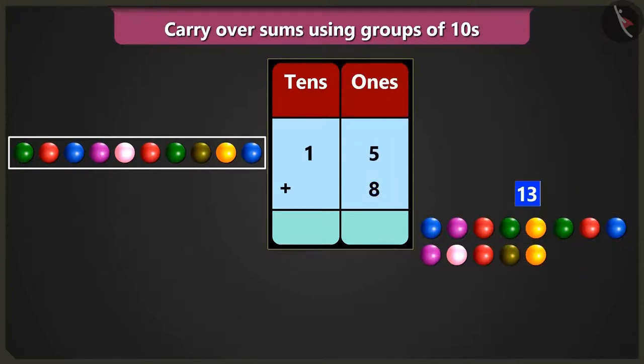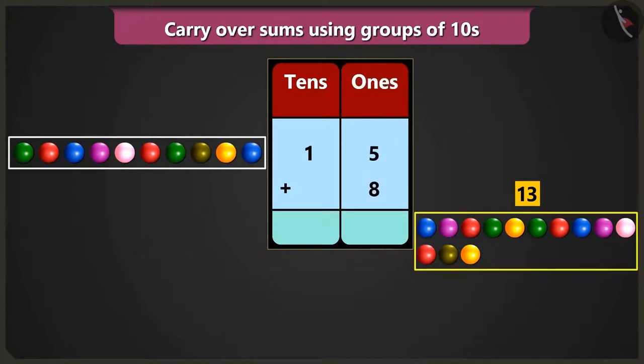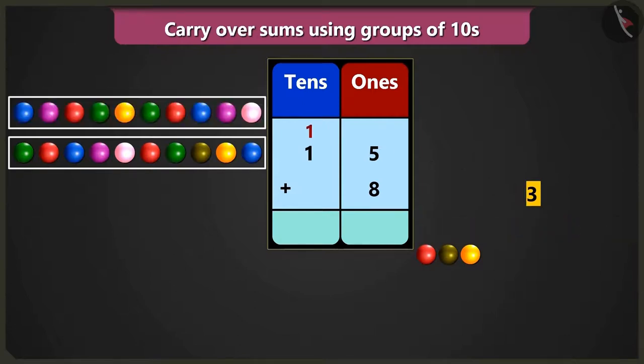Hey, but how will we write 13 in the box of ones? Bubbly, look. Here, out of 5 ones and 8 ones, we can make a group of 10. Because the numbers add up to 13, that is 1 tens and 3 ones. Now, from 13, we will take 1 tens and write in the box of tens, write on top in small letters. That is, we will carry over 1 and write 3 in the ones place.